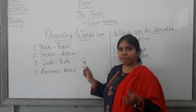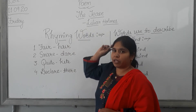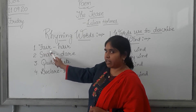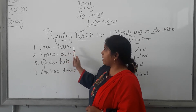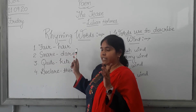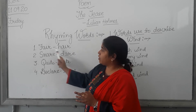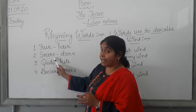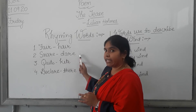After the word meanings, we move further towards the rhyming words of the poem. The first word is F-A-I-R, fair. And the rhyming word for 'fair' is H-A-I-R, hair. If you look at these two words, the sound is the same — that is why they rhyme. Fair, hair. Second word, S-N-A-R-E, snare. And the rhyming word for 'snare' is D-A-R-E, dare.